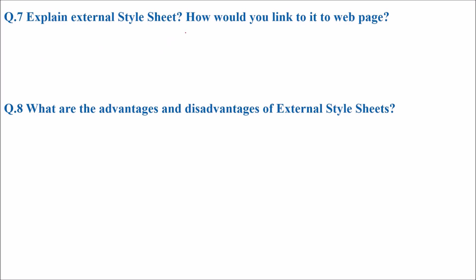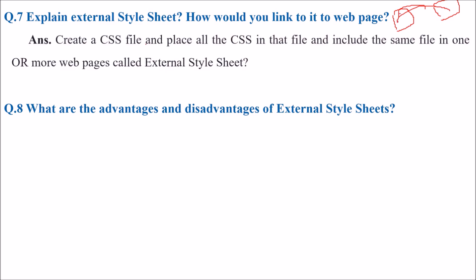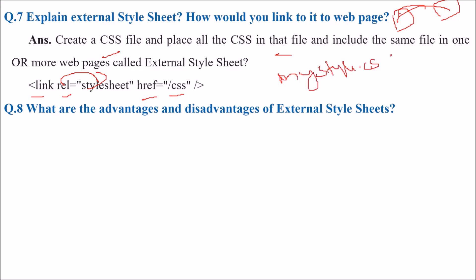Explain external style sheet and how would you link it to the web page. You create a CSS file as an external file and then link it. You can create a CSS file using Notepad++, Notepad, or any text editor, place all the CSS in that file, and include the same file in one or more web pages — this is called an external style sheet. The syntax to link it uses a link element with rel='stylesheet' and href pointing to the path, for example: my-style.css.